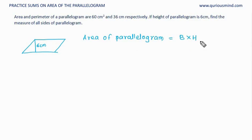And we have been given that the area of parallelogram is 60 cm square. Area is base into height. Area is 60 cm square. Base we don't know. Height is 6 cm. And therefore the base would be equal to 60 divided by 6, which is 10 cm. So what we have got is now we have got that this is 10 cm.